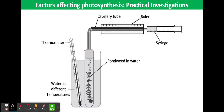In each case, to measure the rate, we need to calculate the quantity taken up or produced per unit of time. In school laboratories, the rate of photosynthesis is often found by measuring the volume of oxygen produced per minute by an aquatic plant.